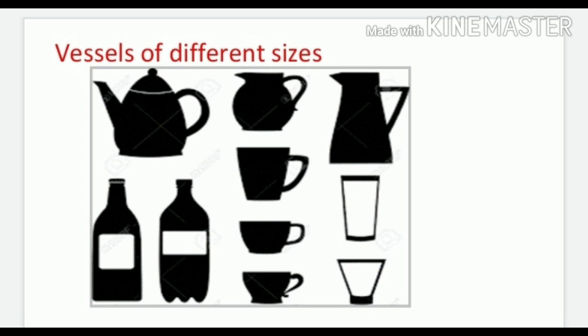Or dekho, chai peene wala chhota sa cup bhi hai, donut ki shape ka. Or is ke alawa kya hai? Yes, there is a glass. Glass hai jis se aap paani peete ho, ya sharbat peete ho. Toh is chapter mein aapko vessels ya containers dikhaye gaye hain.